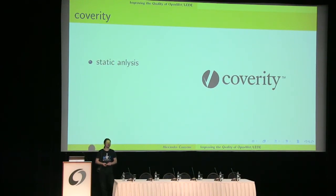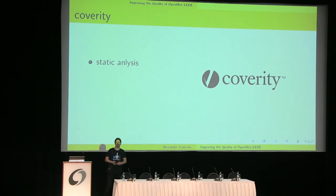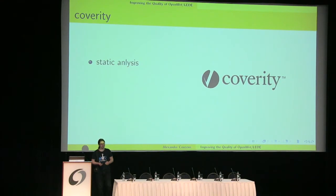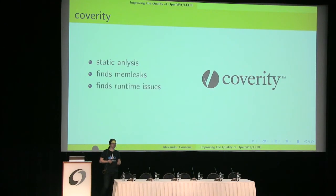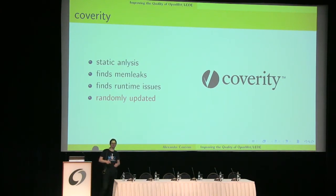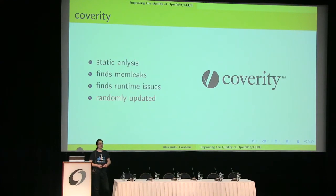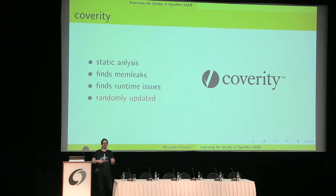Now we're coming to systems which could be good tools but aren't really used. As Felix mentioned earlier, we already have a Coverity account. It does static analysis — it finds memory leaks and some runtime issues, though of course only static analysis. To do all those things you have to compile the source code with a special compiler and upload the result of that compile run. We don't have any automated job for that — it would be nice to fix that in the near future because it's quite easy to do. From a limited compile run, we have around 3.7 million lines of code covered, which doesn't mean all the source code, just all the source code which got compiled.